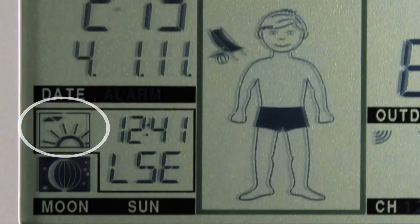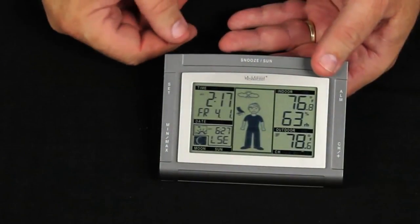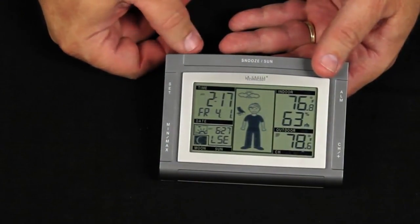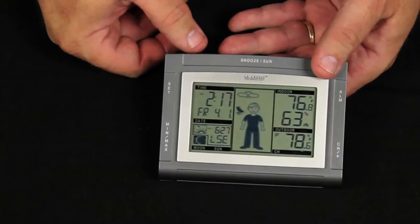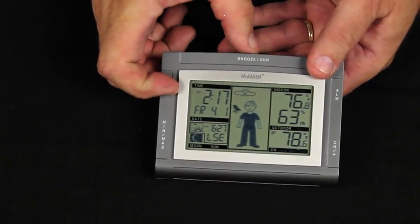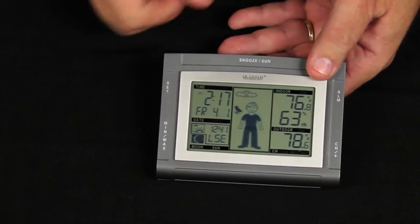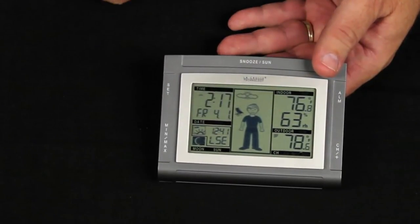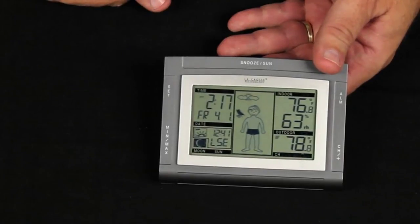If I press the snooze button, now my arrow is pointing down. And that shows me on April 1st of 2011, sunset was at 627. And if I press the snooze button once again, it's showing me the total number of hours and minutes of daylight for that date.